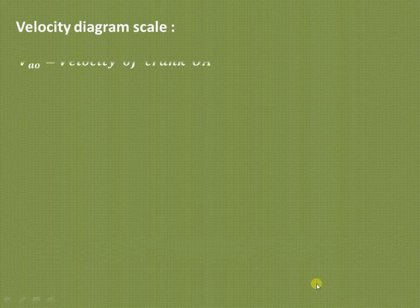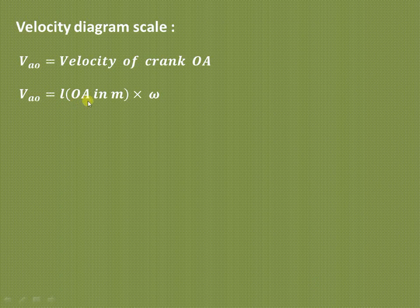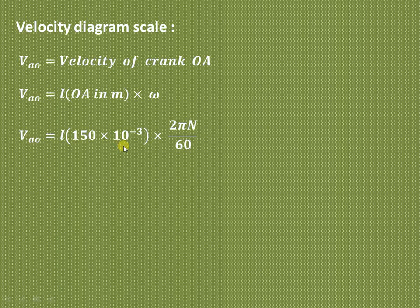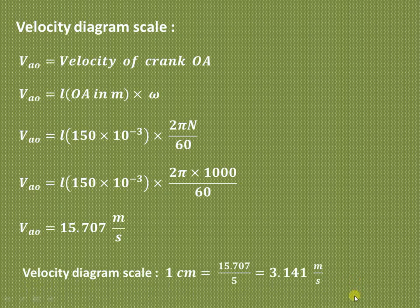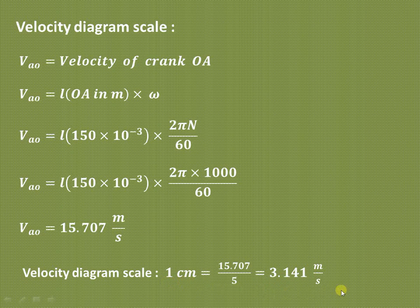The first step is to find the velocity of the crank using V = r·ω, where r is the link length in meters. OA = 150 mm = 0.150 m, and ω = 2πN/60 with N = 1000 rpm. This gives V_AO = 15.707 m/s. If we represent this vector by 5 cm on the sketchbook, the velocity diagram scale is 15.707 ÷ 5 = 3.141 m/s per centimeter.